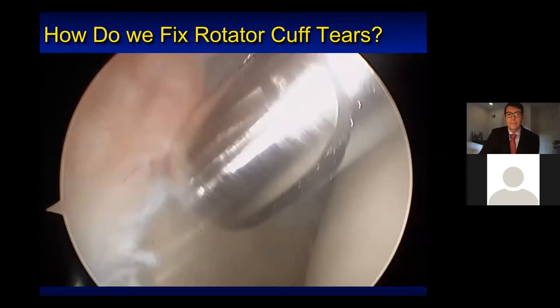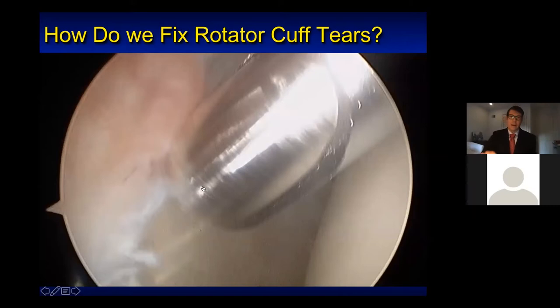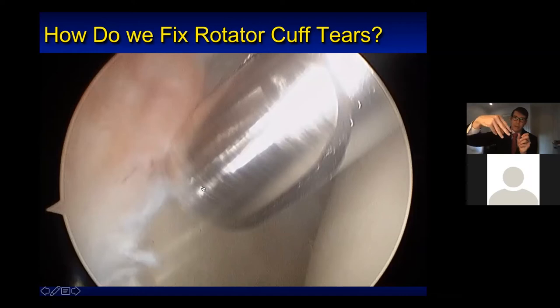This is an arthroscopic video showing how we fix the rotator cuff. This is done through small one-centimeter incisions in the back, front, and side of the shoulder with a high-definition fiber optic video camera, through which we put instruments to simply sew the tendon back down to the bone.